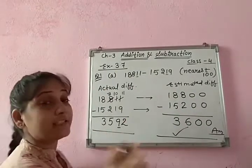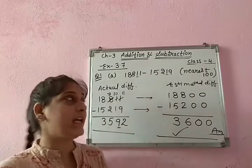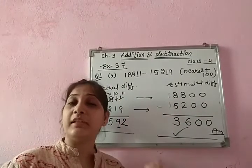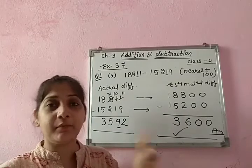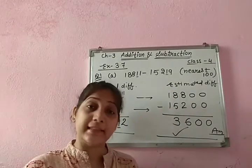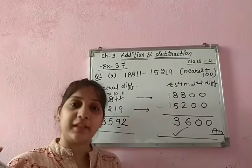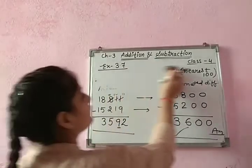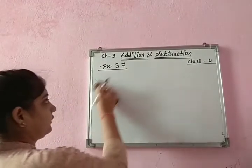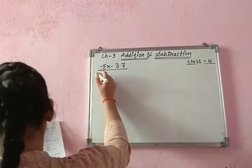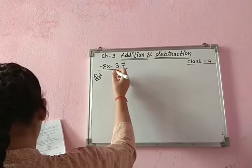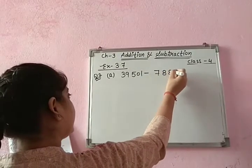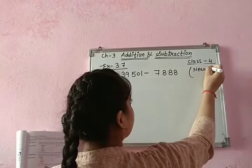So I solved part A of question number 1; part B you need to solve yourself. You have to find both A and B. Now question number 2 is the same: find the actual as well as estimated difference, but by rounding off to nearest thousand. So this time we do nearest thousand.